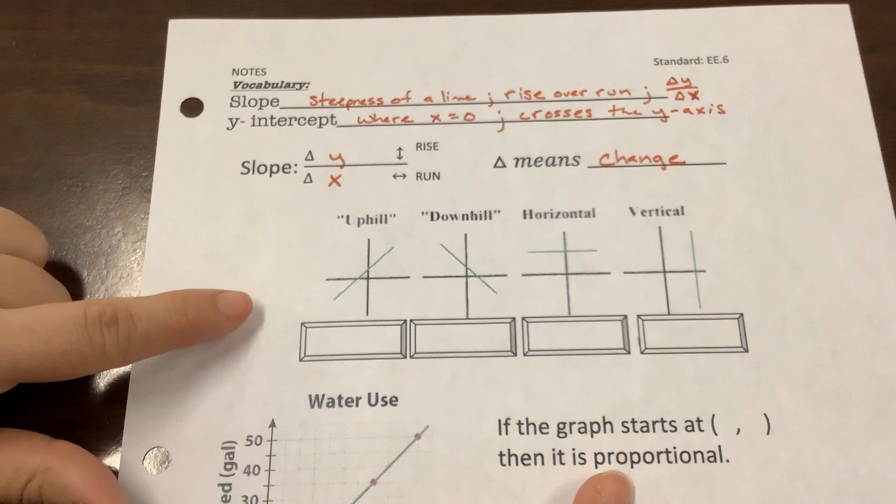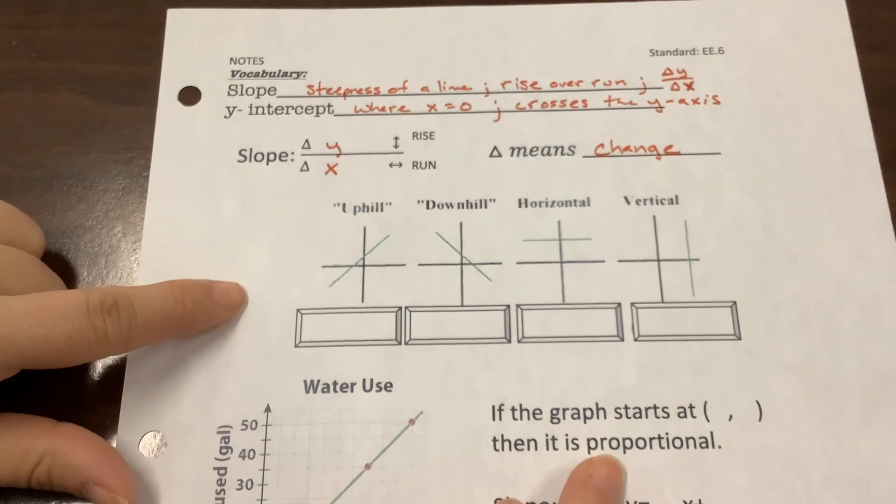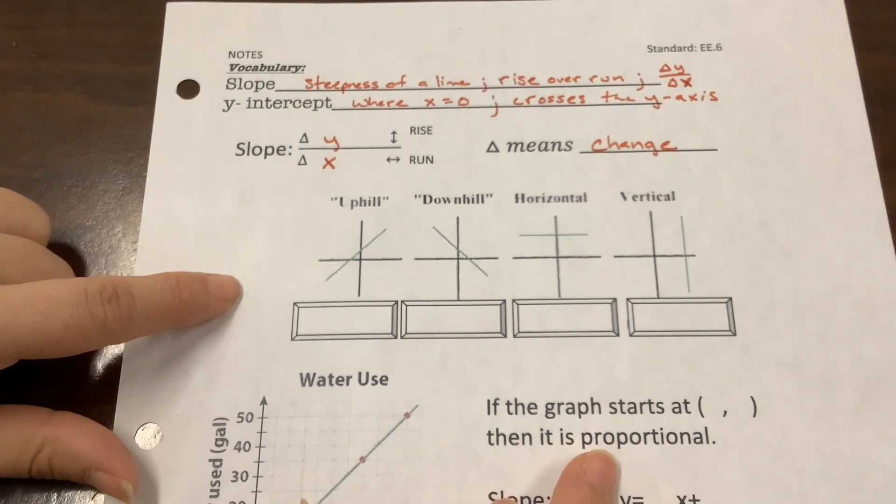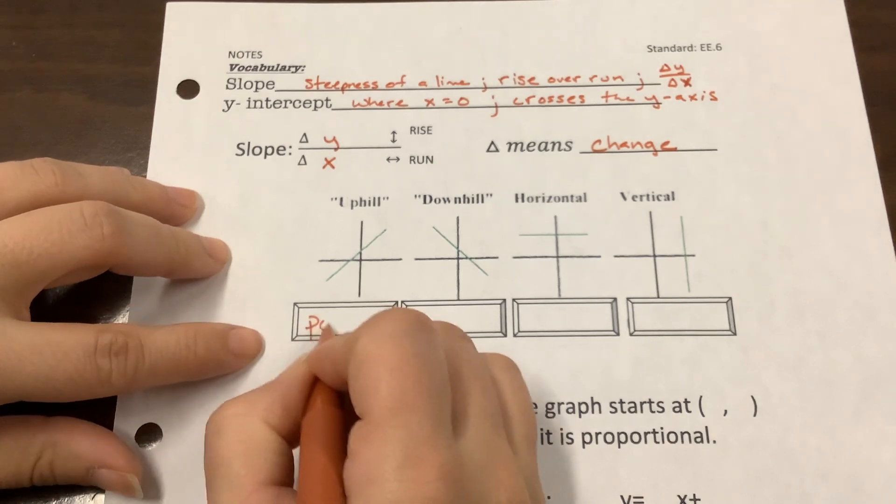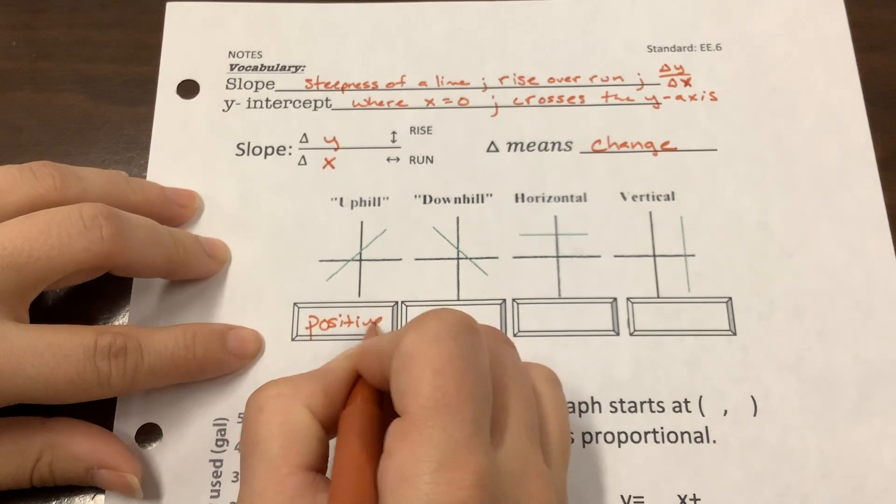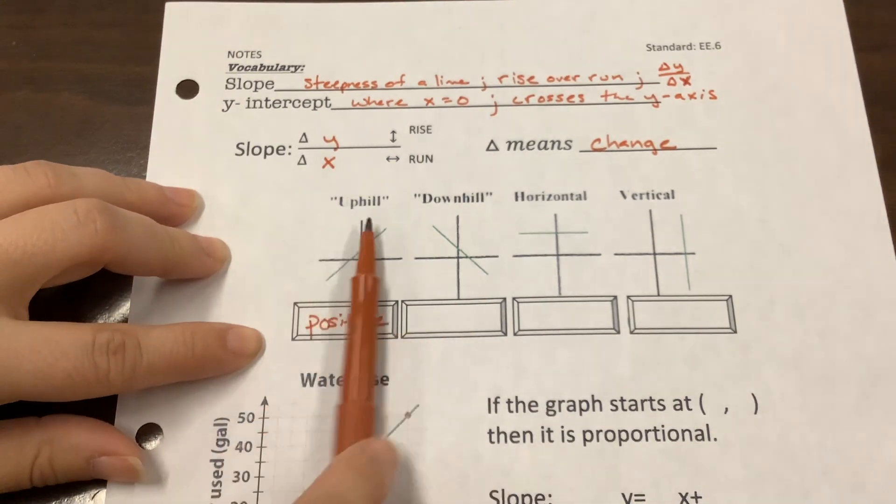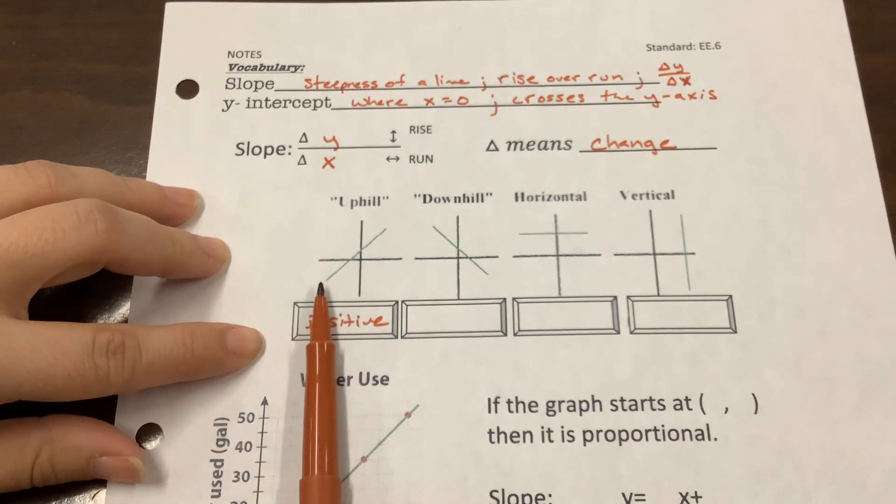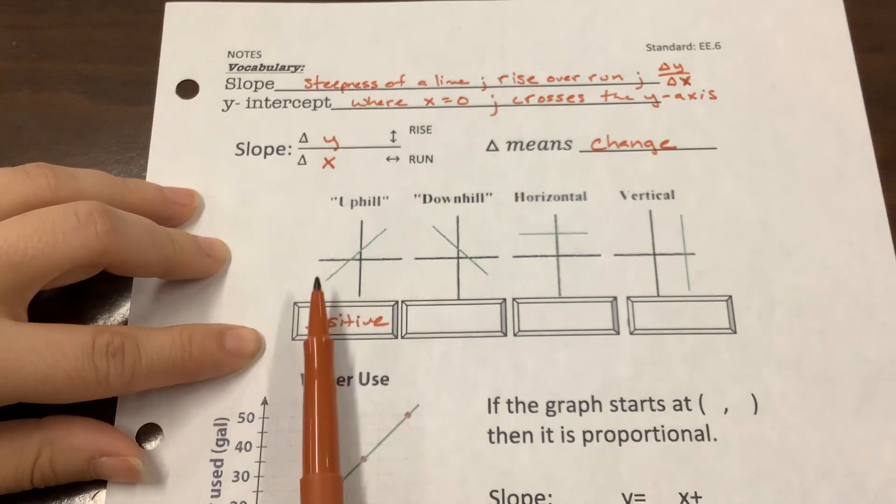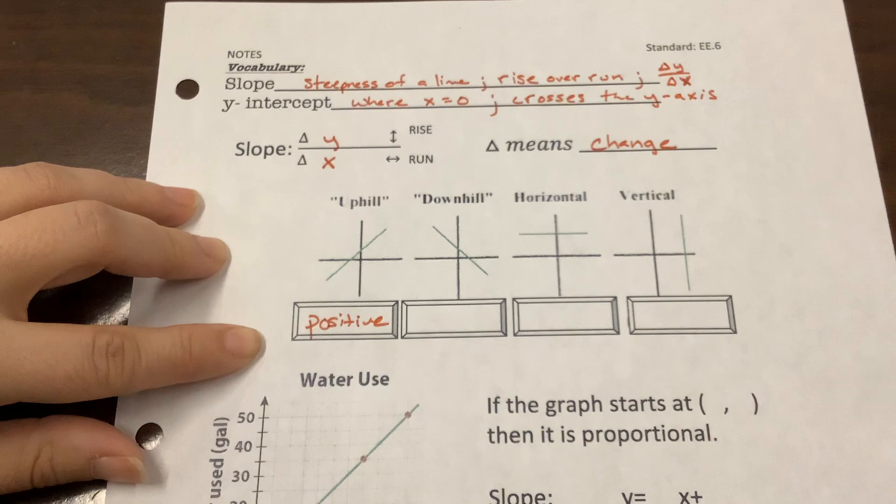All right, so now, there are four general slopes. We have a positive slope. And if you look, we read everything left to right. So if we're reading this line, it's going up. From left to right, it's increasing, so it's positive.